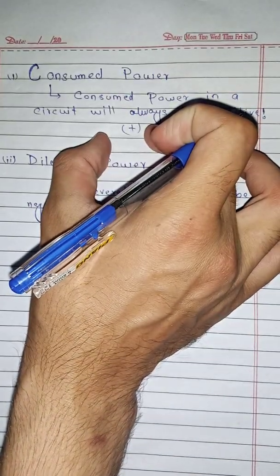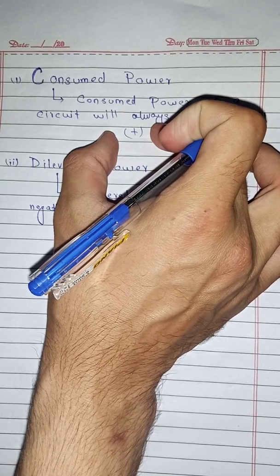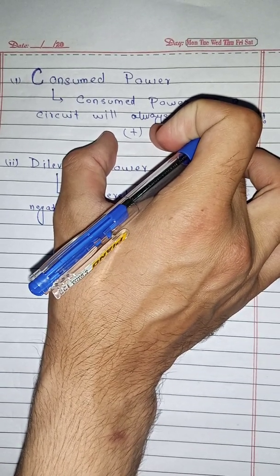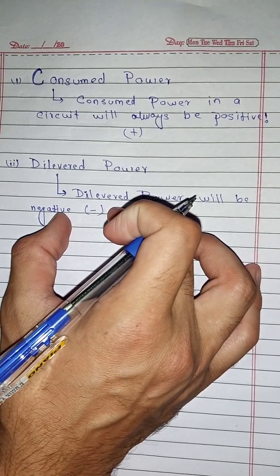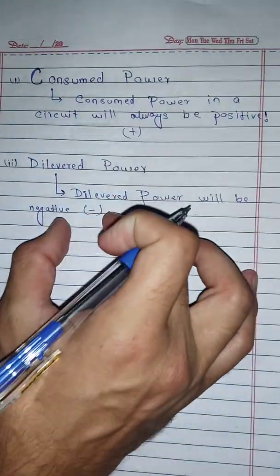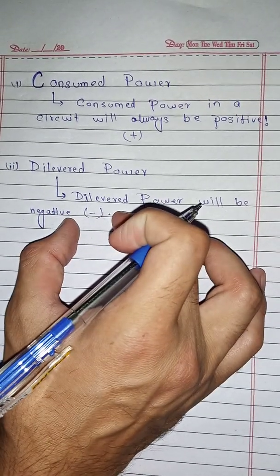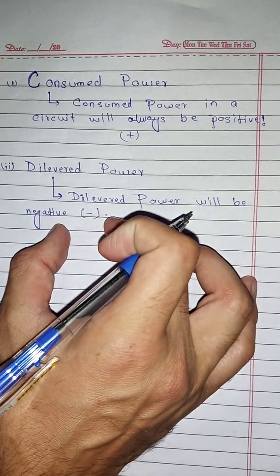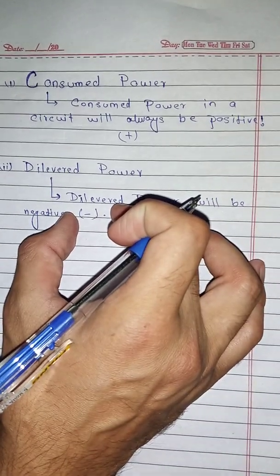Whenever we talk about consumed power, it means the circuit element is behaving like a resistor — it is consuming power. Therefore, in this case, the current will be positive. Now the question arises: why is delivered power negative? A circuit element like a resistor cannot supply power to the circuit; it always consumes power. Therefore, whenever we talk about delivered power by the circuit element, we assume it to be negative.